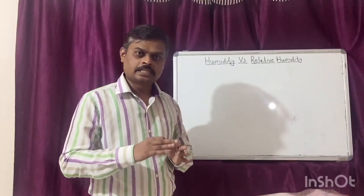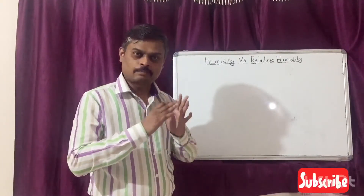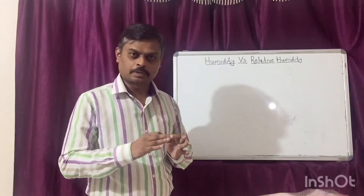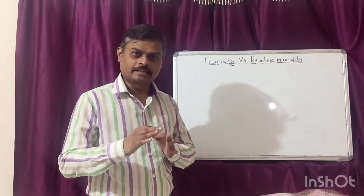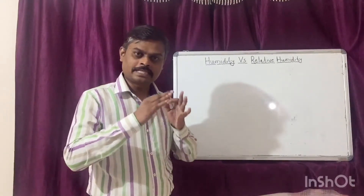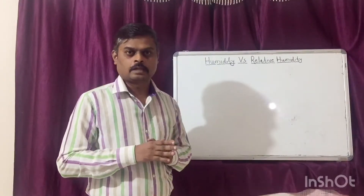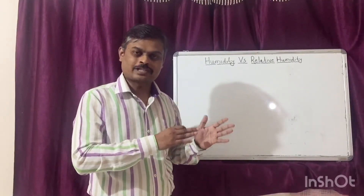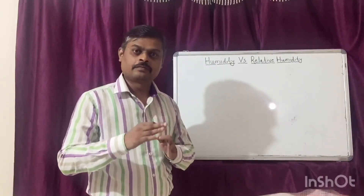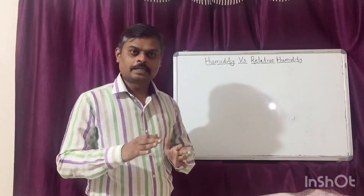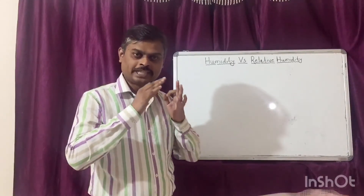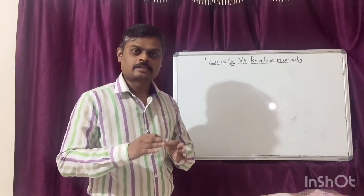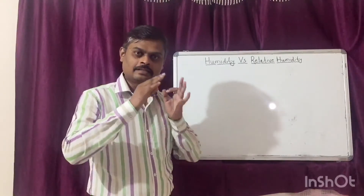Humidity largely depends upon the atmosphere of the area and season of the year. For example, in a dry area like a desert, the humidity remains very very low. Whereas in areas near the ocean or sea, the humidity remains very very high. Similarly, the humidity in the rainy season is always higher than in summer season.